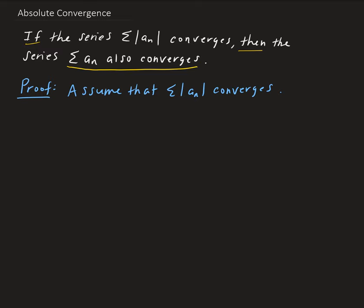We're going to start with an inequality. It can be shown that zero is less than or equal to the nth term plus the absolute value of the nth term, and this is going to be less than or equal to two times the absolute value of the nth term. This is a common inequality used in the study of series and sequences, and it's true for all n.